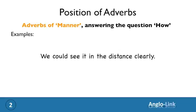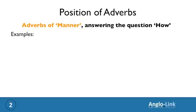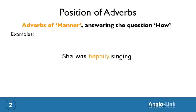Let's look at another example: 'We could see it in the distance clearly' — who, what, where (in the distance), and how (clearly). As it's an '-ly' adverb, you can move it before the main verb and stress it: 'We could clearly see it in the distance.' And a final example: 'She was singing happily' — who, what, and how. The '-ly' adverb 'happily' can come before the main verb: 'She was happily singing.'